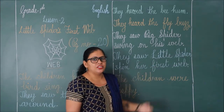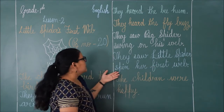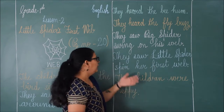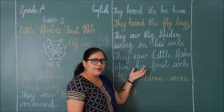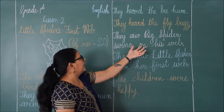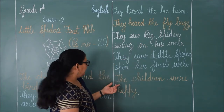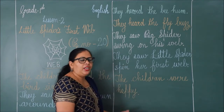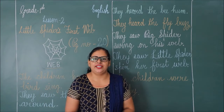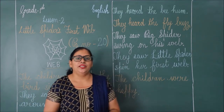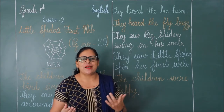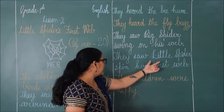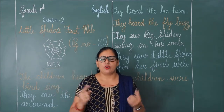They saw the little spider swing on her first web — chote spider ko apne web par banate huye dekha. Little spider was spinning her first web. The little spider was spinning her web for the first time.